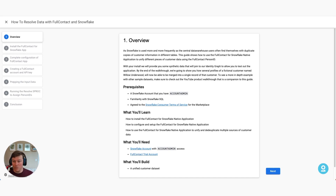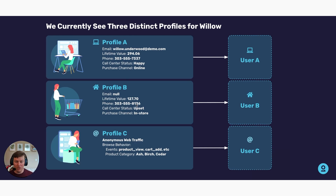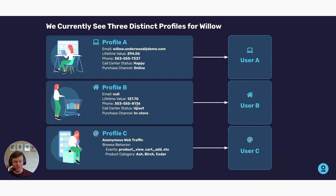We're going to zoom into Willow Underwood and how Urban Roots is currently seeing her. This is the customer dilemma. Urban Roots is seeing Willow as three different profiles. In profile A, Willow is an online purchaser with a lifetime value of almost $300, a particular phone number, and a call center status showing that she's happy.